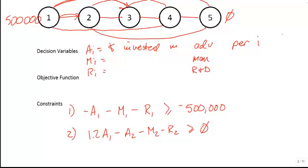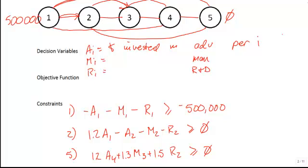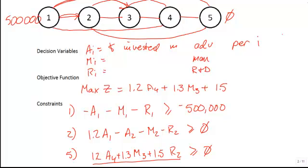We'll skip periods 3 and 4 since they follow the same pattern, and look at period 5. What's flowing into period 5? A4, M3, and R2. Advertising grows by 1.2, manufacturing by 1.3, and research and development by 1.5. That must be greater than or equal to zero since we have no demand in period 5 — we simply want to make the inflow as large as possible. The left-hand side of the period 5 constraint is our objective function: maximize 1.2·A4 + 1.3·M3 + 1.5·R2.